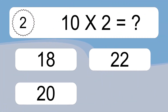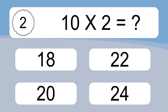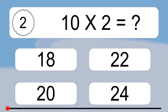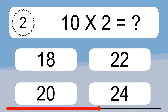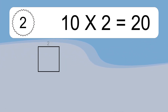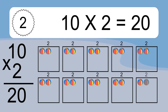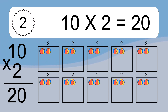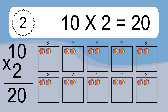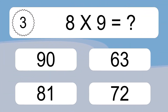Ten times two equals what? Ten times two equals 20. We have 10 boxes and each box has two colorful balls inside. If you count all the balls in all the boxes together, you will have 10 times two balls. This equals 20 balls.